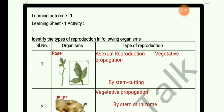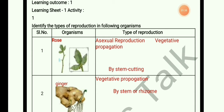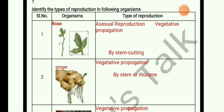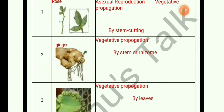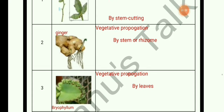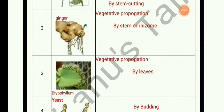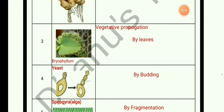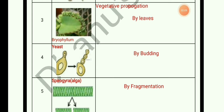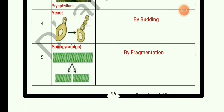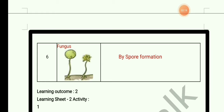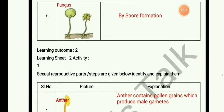Learning sheet 1: identify the types of reproduction in flowering organisms. There are 6 images, all about asexual reproduction. First image: rose — vegetative propagation by stem cutting. Second: ginger — vegetative propagation by rhizome. Third: Bryophyllum — vegetative propagation by leaves. Fourth: yeast — by budding. Fifth: Spirogyra — by fragmentation. Sixth: fungus — by spore formation.